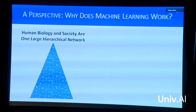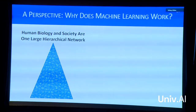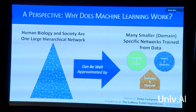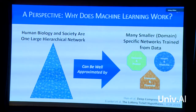This leads to a perspective: why does machine learning work? If you think of all of human and biological society as one giant network, recent research shows that large networks can be well approximated by smaller networks. Machine learning is taking a relatively small neural network and trying to approximate a really huge biological neural network grounded all the way down to physics. That's at least one interpretation, and there may be others.